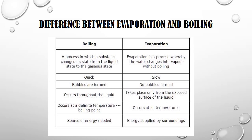Let us see the differences between evaporation and boiling. Boiling takes place at a definite temperature — the boiling point — whereas evaporation occurs at all temperatures, even below the boiling point. During boiling, we are supplying heat energy, so it's a quick process. Evaporation is a slow process because particles absorb energy from the surroundings naturally on their own.